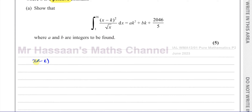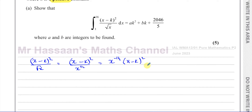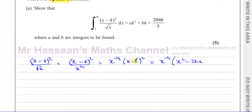Before we can integrate, we have to get the expression ready. We have x minus k all squared divided by the square root of x. I'll write this in index form, so the square root of x becomes x to the power of a half in the denominator, which moves to x to the power of negative a half on top, times x minus k squared. To integrate this, I have to expand the bracket. Squaring it gives x squared minus 2kx plus k squared.